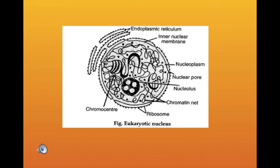In the interphase, the nucleus shows a network of very long, extremely thin, dark staining fibers called chromatin fibers. As the cell begins to enter the first stage of cell division called prophase, the chromatin fibers condense to form chromosomes. The chromosomes readily pick up certain dyes and get colored, hence the name chromosome, where chroma means colored and soma means body.